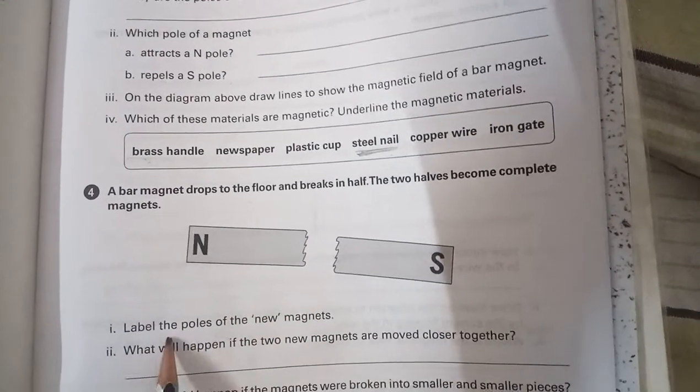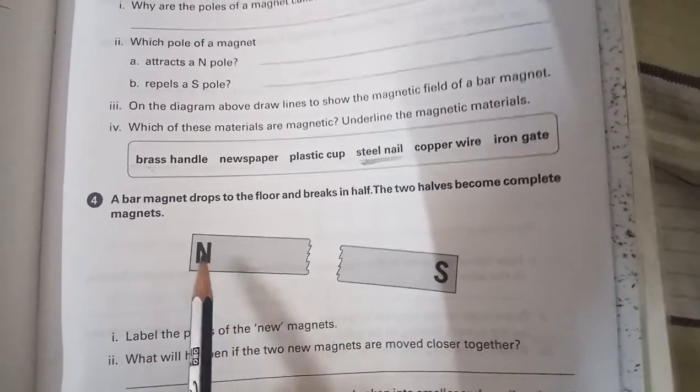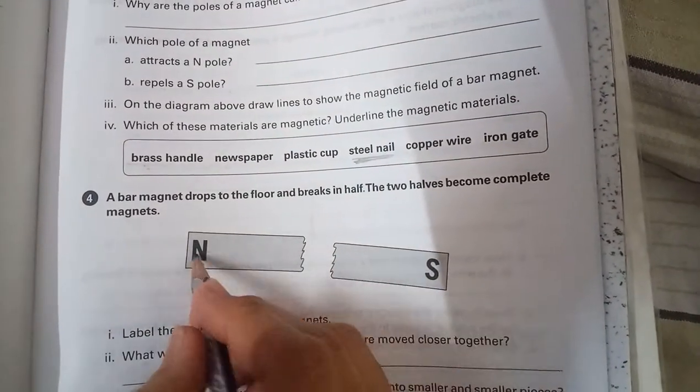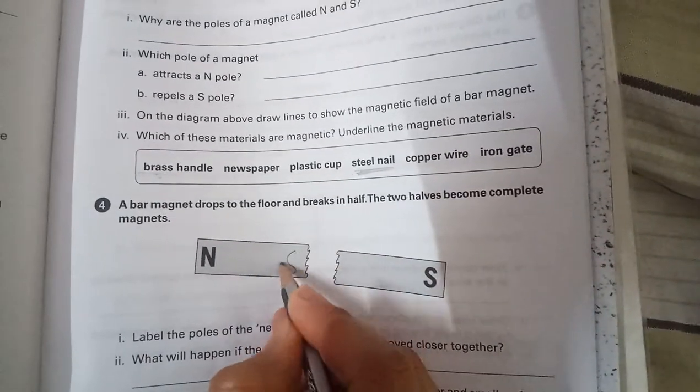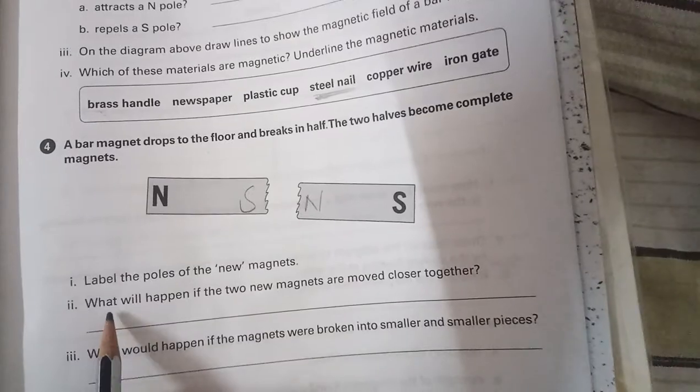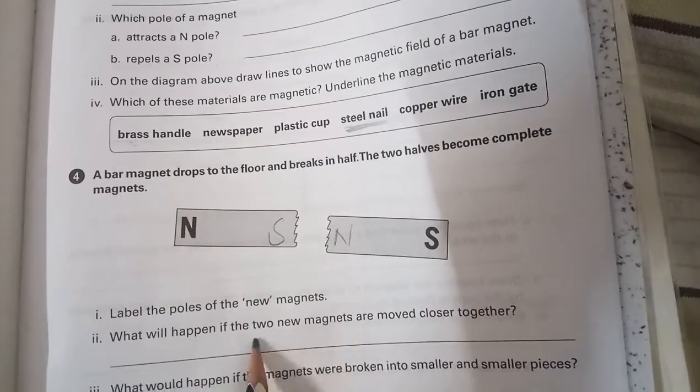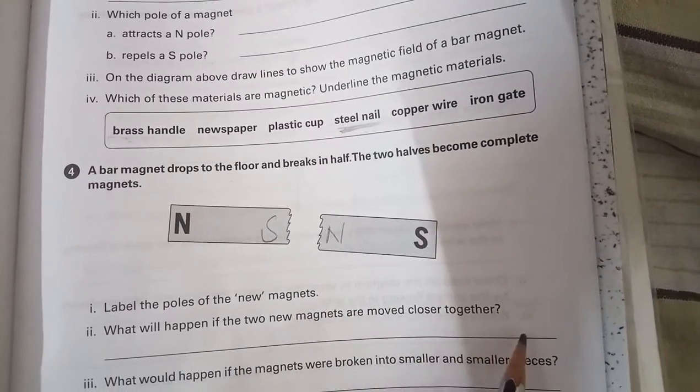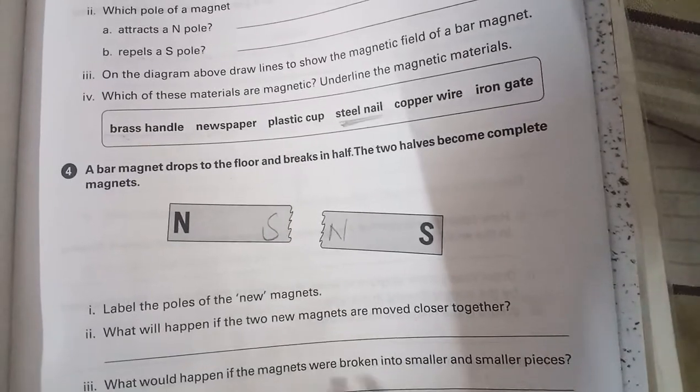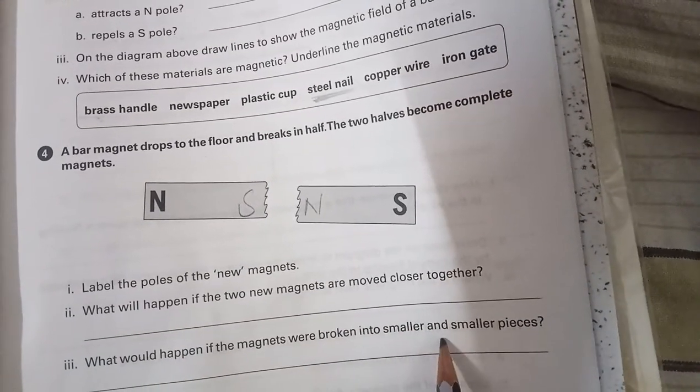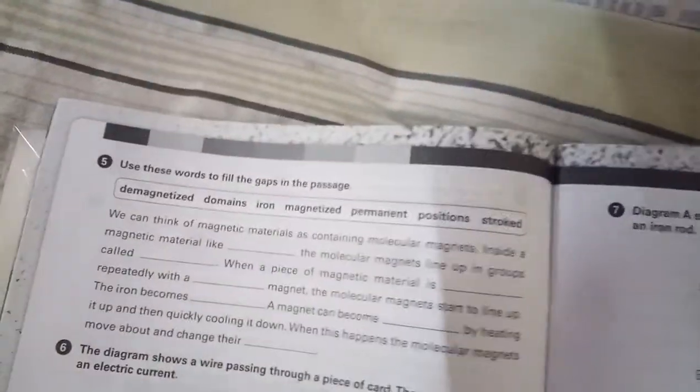A bar magnet drops to the floor and breaks in half. The two halves become complete magnets. Label the poles of new magnets. You have to give the labels of new magnet. Obviously it will become an N and S. What will happen if two new magnets are moved closer together? What would happen if the magnets were broken into smaller and smaller pieces? Obviously they will remain the same magnets.